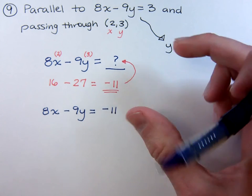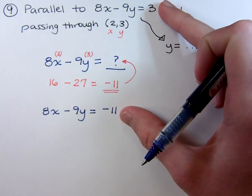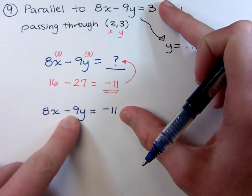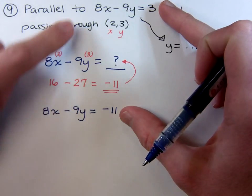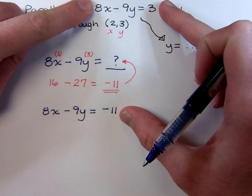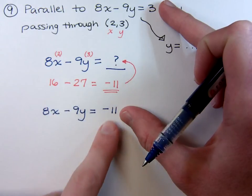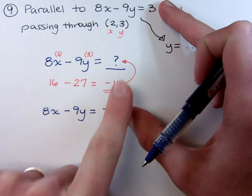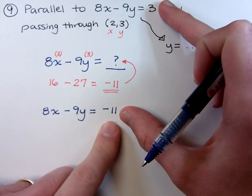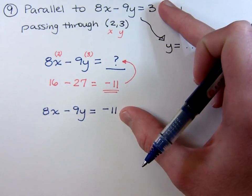You see how these two guys match up. The ax plus by part is exactly the same for both of them, 8x minus 9y, and their constants are going to be different, which is going to lead to different y-intercepts. So these guys are going to be parallel.